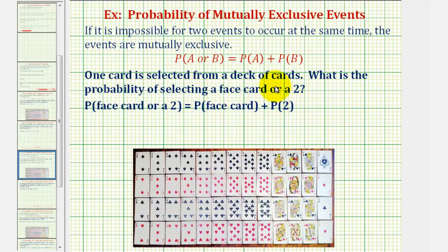Since one card cannot be a face card and a two at the same time, these two events are mutually exclusive. And therefore, to find the probability of selecting one card and it being a face card or a two, we find the sum of the probability of a face card plus the probability of a two.